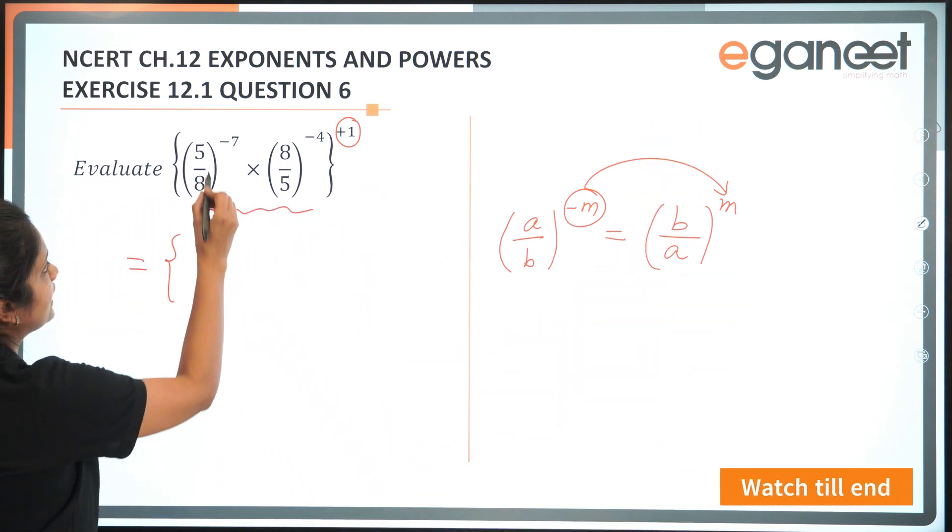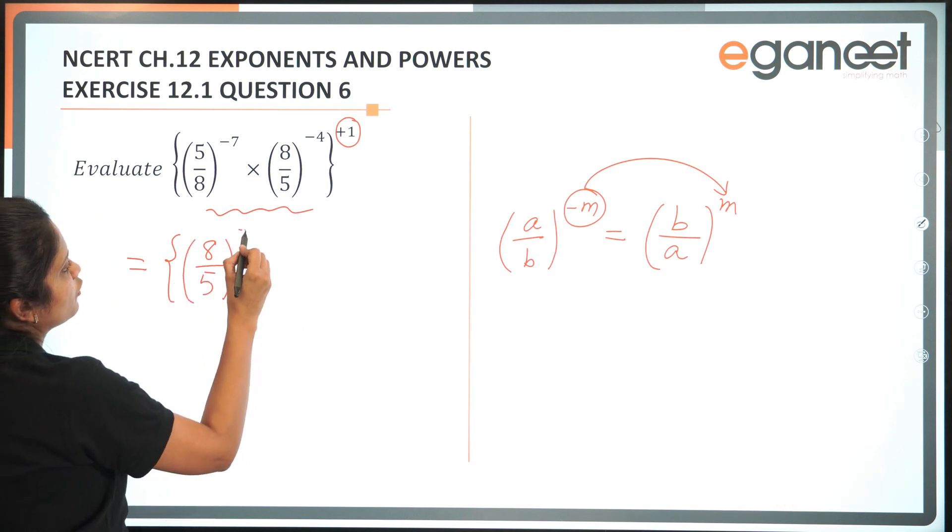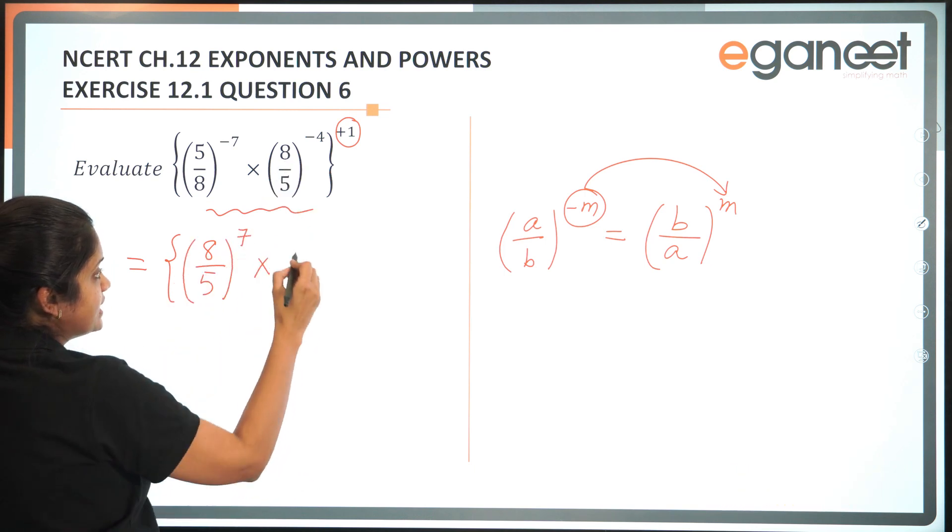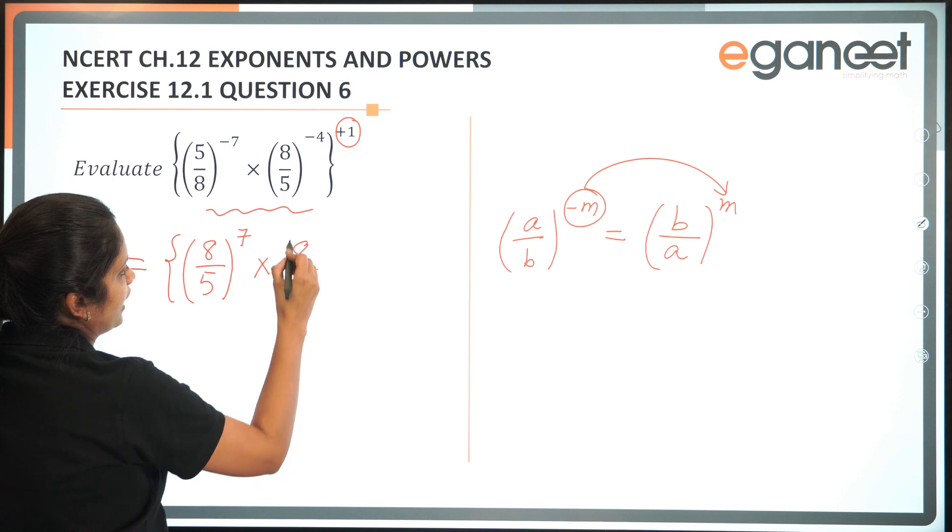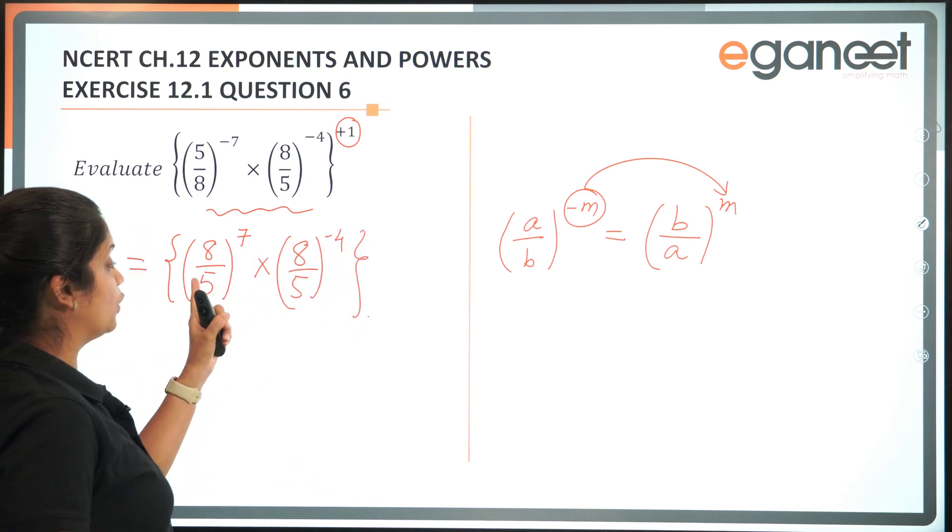So here I can just rewrite 5 by 8 as 8 by 5 raised to the power of plus 7, and I just rewrite 8 by 5 to the power of minus 4 as it is. Observe what is over here.